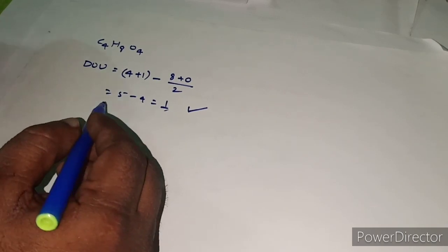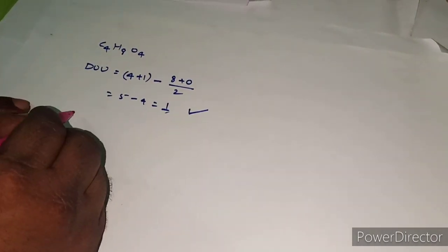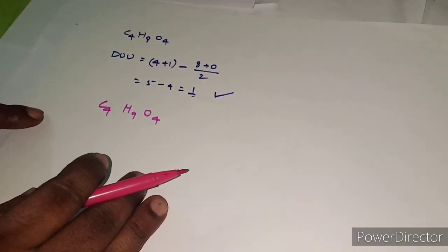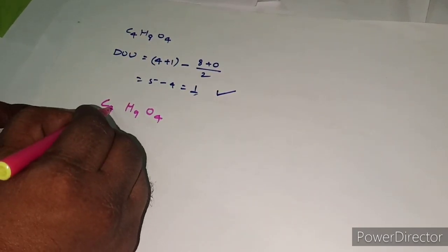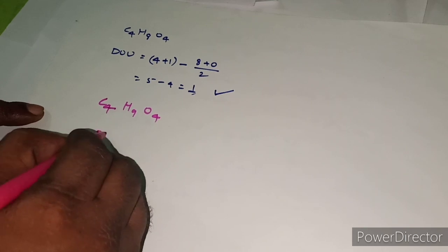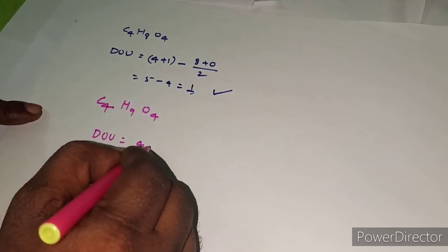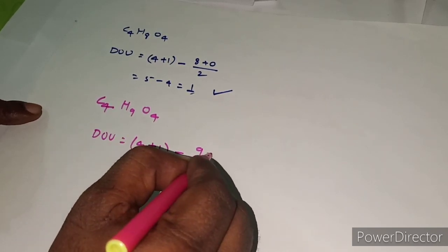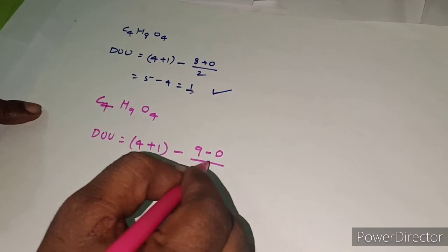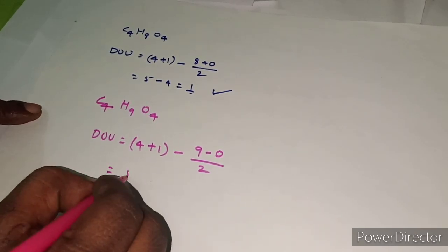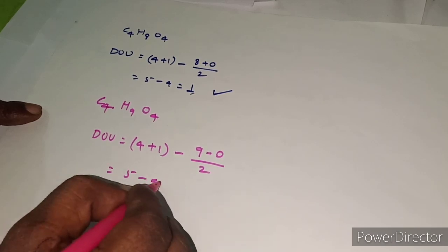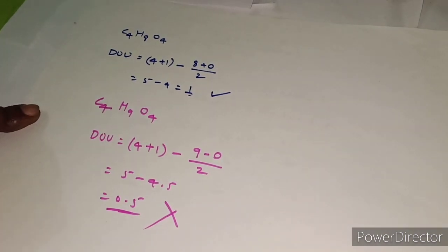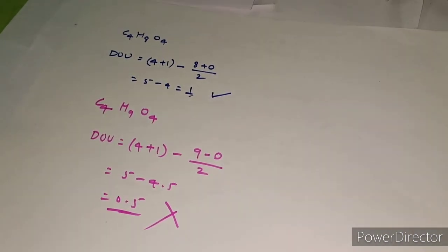Now take the molecule C4H9O4. DOU = (4 + 1) − (9 + 0 − 0) / 2 = 5 − 4.5 = 0.5. The result is 0.5, which is a fraction. A fraction means this molecule does not exist — it is not an organic compound.